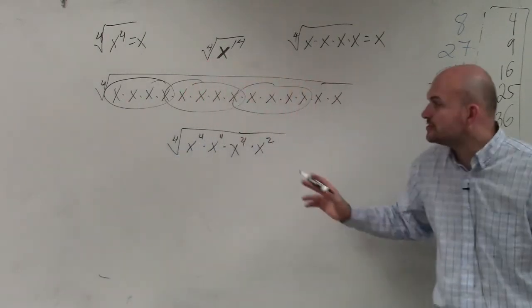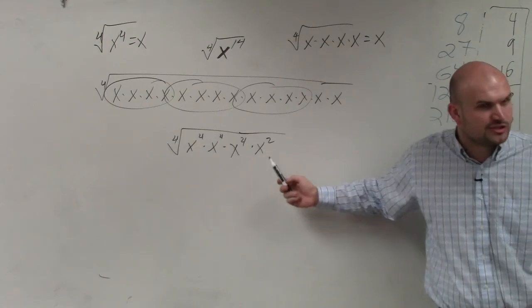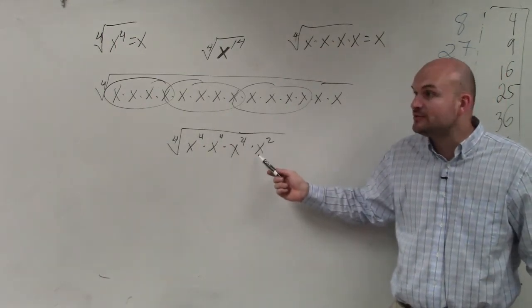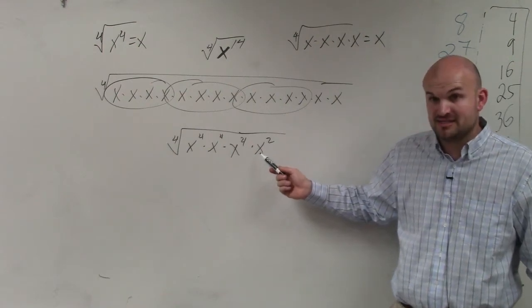Why do I have to include the x squared? Because remember, when you multiply exponents, you add the powers. 4 plus 4 plus 4 plus 2 equals x to the 14th. Does everybody see that?